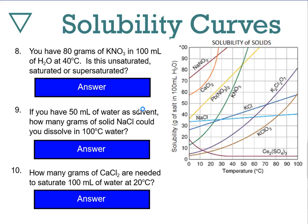You have 80 grams of potassium nitrate in 100 mL of water at 40°C — is this unsaturated, saturated, or supersaturated? Find the potassium nitrate curve (green) at 40°C. This says 80 grams are already dissolved — you successfully achieved this. If you have 80 grams dissolved when you should only be able to dissolve roughly 65, that means you're above the saturation curve. So it's supersaturated.